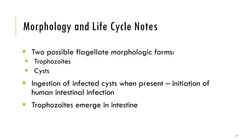The ingestion of infected cysts, when present, is the initiation of the infection — that is the infective stage. Usually, contaminated food or water is the primary source of parasitic infection in relation to our flagellates. Trophozoites emerge in the intestine after ingestion. For example, Giardia lamblia or Giardia intestinalis trophozoites take up residence in the duodenum. Therefore, it is essential to evaluate duodenal aspirates for the presence of Giardia lamblia.